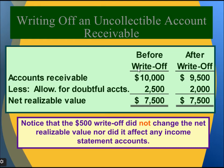Assume that before this write-off, accounts receivable balance was $10,200 and allowance for doubtful accounts was $2,500, giving a net realizable value of $7,500. After writing off Mary's $500, accounts receivable becomes $9,500 and the allowance becomes $2,000, so net realizable value remains $7,500. Notice that the $500 write-off did not change the net realizable value, nor did it affect the income statement.